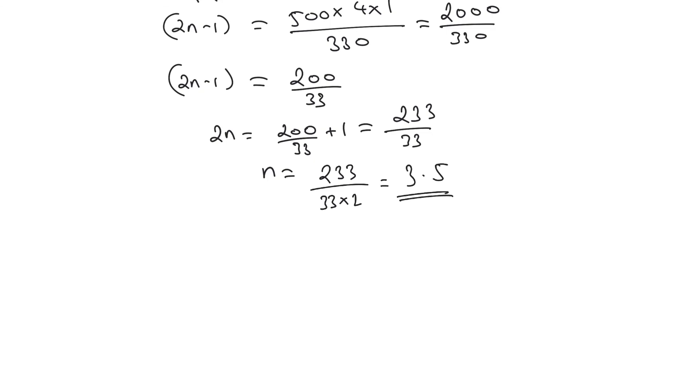The value of n should be an integer. So we can write the value of n should be equal to 3, because the fourth harmonic is not possible.